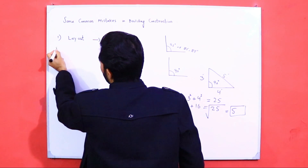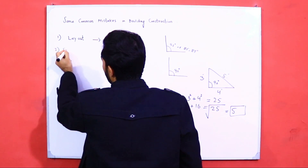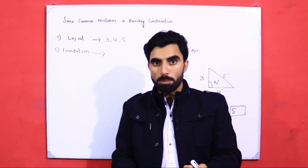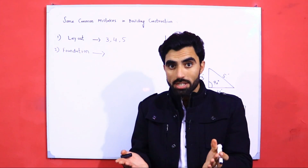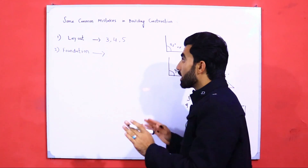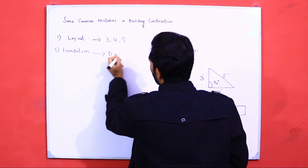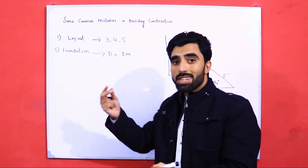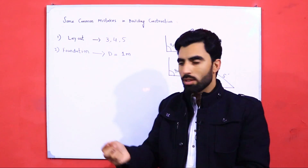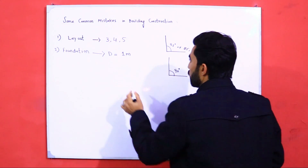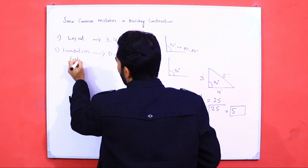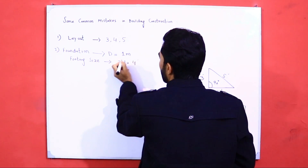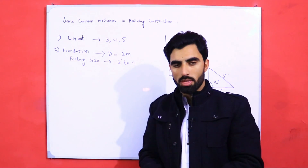The second point is foundation. What are the mistakes in foundation? Because we people ignore civil engineers, you don't have a structure design or an architecture design. The foundation depth should not be less than 1 meter. If you keep it less than 1 meter you will face more problems, because 1 meter can work for 2 to 3 stories. For a domestic house, 1 meter works fine. The footing size should be 3 to 4 feet — from 3 to 4 feet is the minimum footing size for an RCC column.